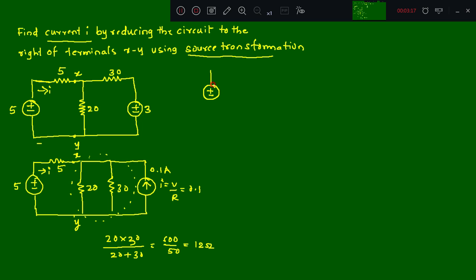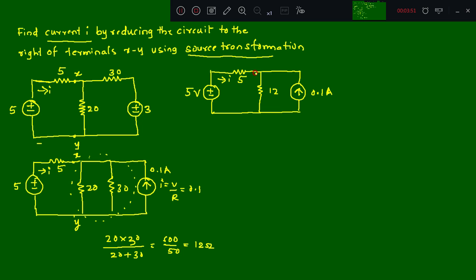The redrawn circuit has the 5V source with the 5 ohm resistor. The equivalent parallel resistance is 12 ohms, and we still have the current source of 0.1 amperes. We need to find i, the current flowing through the 5 ohm resistor. Since the current source is in parallel with the 12 ohm resistance, this can be converted into a voltage source with a series resistance of the same value.